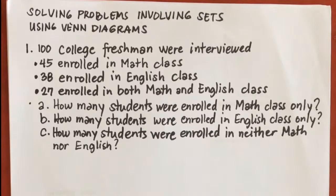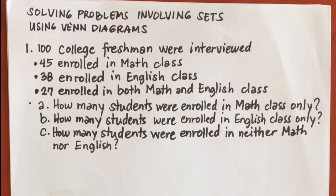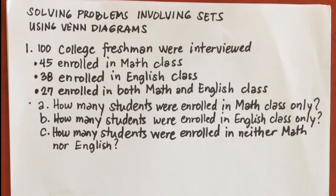Let's have example number 1. 100 college freshmen were interviewed: 45 enrolled in math class, 38 enrolled in English class, and 27 enrolled in both math and English class. Questions: A. How many students were enrolled in math class only? B. Enrolled in English class only? And C. How many students were enrolled in neither math nor English?